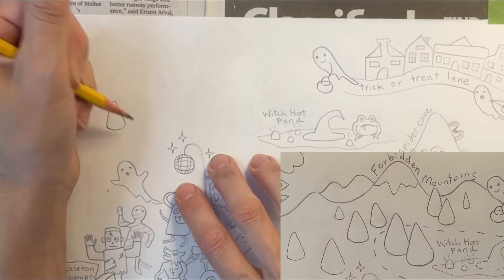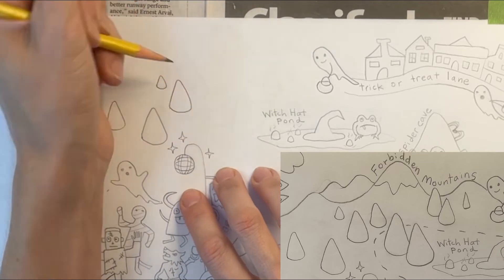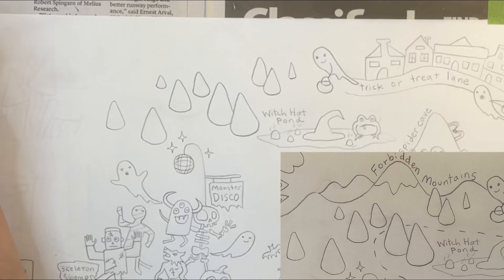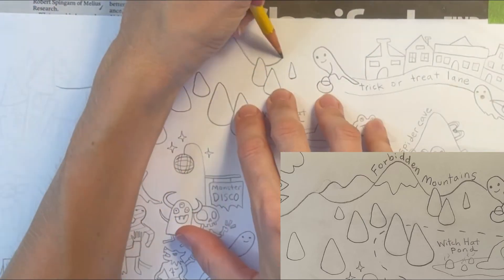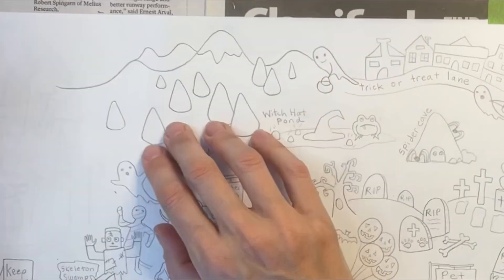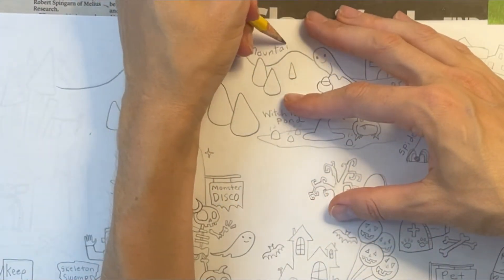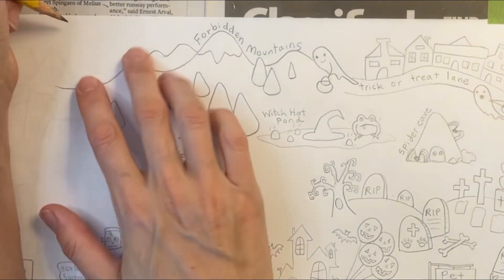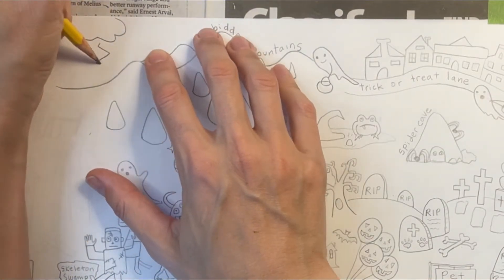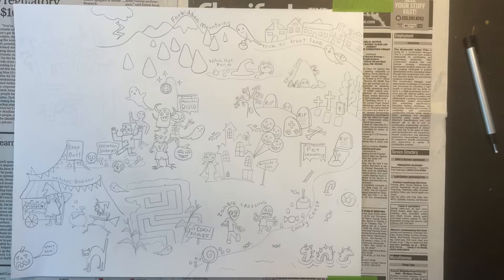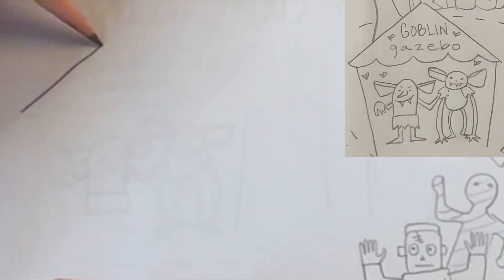Now I'm drawing a candy corn forest, so instead of trees there's going to be a forest of candy corns. Behind my forest, I'm adding a wavy range of mountains that I'm going to call the Forbidden Mountains, and then I'm drawing some thunder and lightning. I don't have any goblins in my picture yet and I definitely want some goblins.